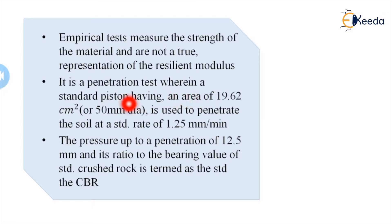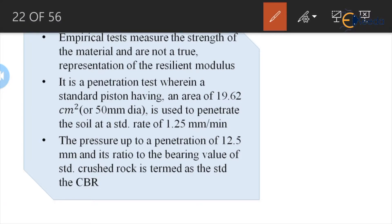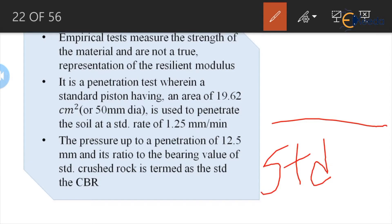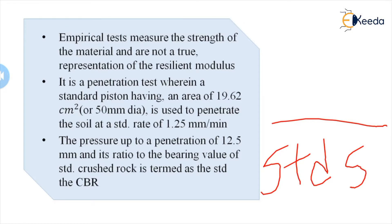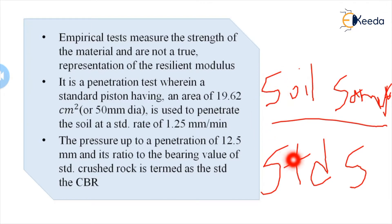CBR is a penetration test in which a standard piston of area 19.62 cm² (50 mm diameter) is used to penetrate the soil at a standard rate of 1.25 mm per minute. The pressure up to a penetration of 12.5 mm is measured, and its ratio to the bearing value of standard crushed rock is termed as the CBR. The standard soil in CBR is crushed rock, and the sample soil penetration is compared to that of standard crushed rock at 12.5 mm penetration.